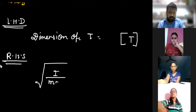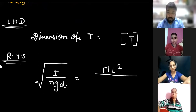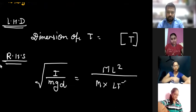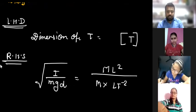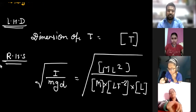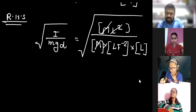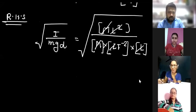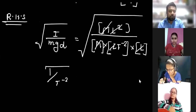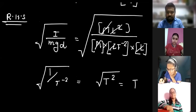The right-hand side is the square root of I upon mgd. The dimension of I is ML², mass dimension is M, g is acceleration so LT⁻², and d is distance so L. This whole expression is under a square root. M cancels out, L² and L cancel, and we are left with 1 divided by T⁻², whose square root gives T.